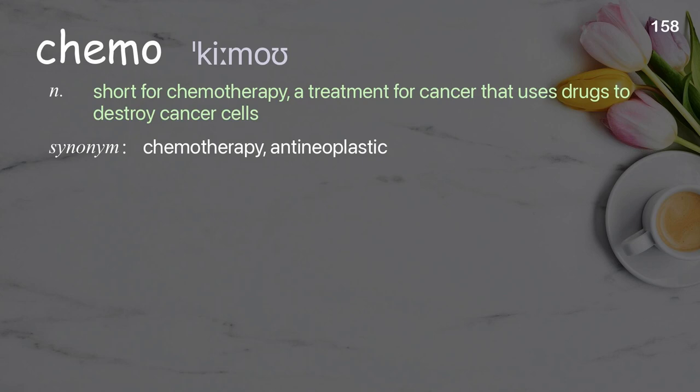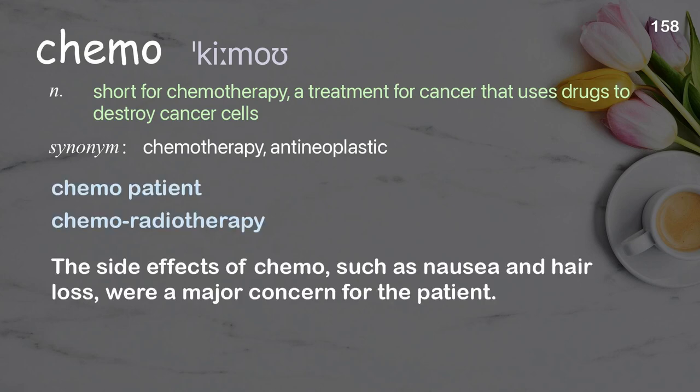Chemo: short for chemotherapy, a treatment for cancer that uses drugs to destroy cancer cells. Examples: chemo patient. The side effects of chemo, such as nausea and hair loss, were a major concern for the patient.